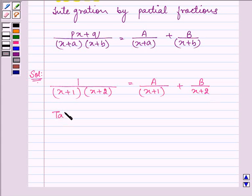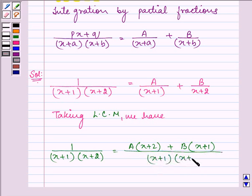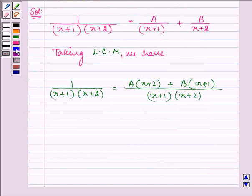1 over x plus 1 into x plus 2 is equal to A into x plus 2 plus B into x plus 1, divided by the LCM that was x plus 1 into x plus 2. So for this we can have...